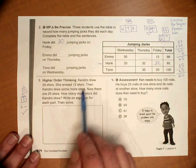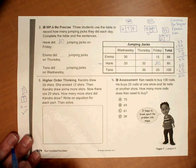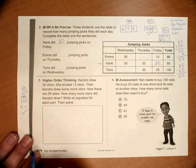So the problem is Kendra drew 26 stars. She erased 12 stars. Then Kendra drew some more stars. Now there are 29 stars. How many more stars did Kendra draw?